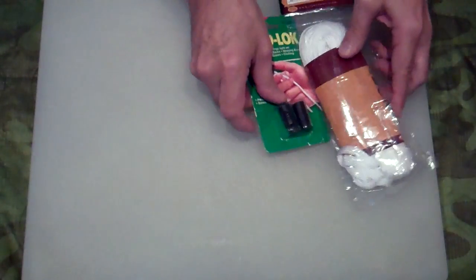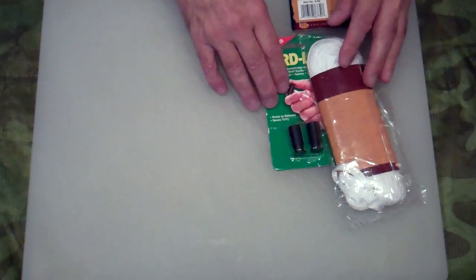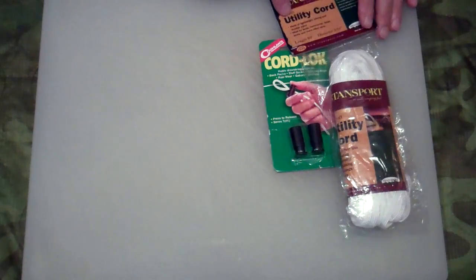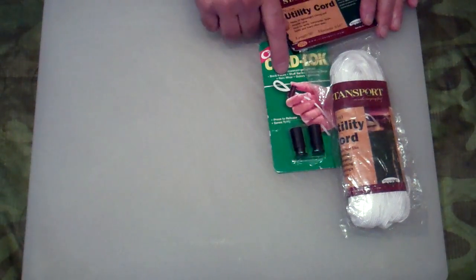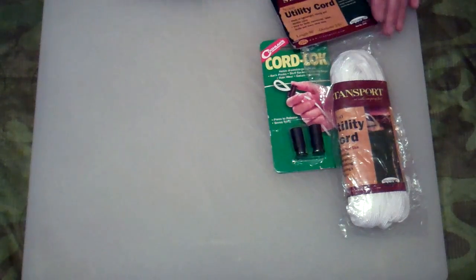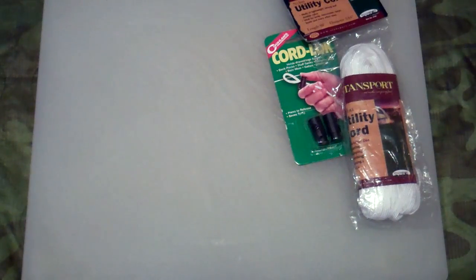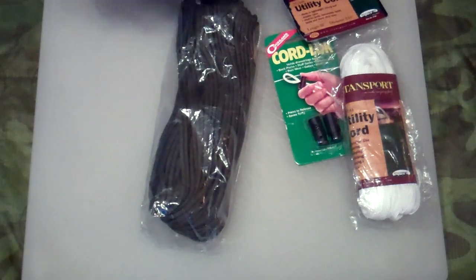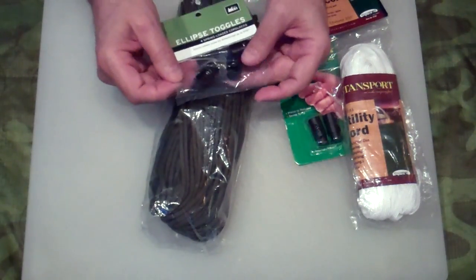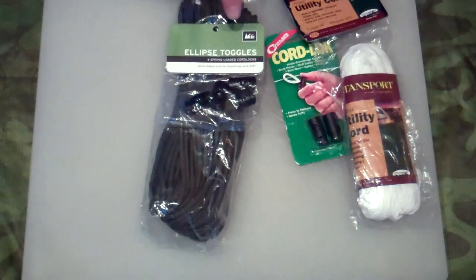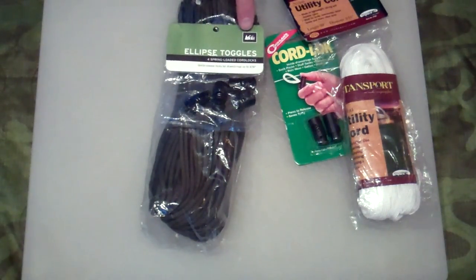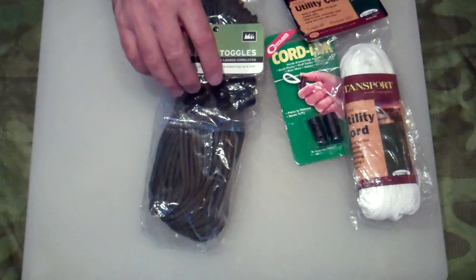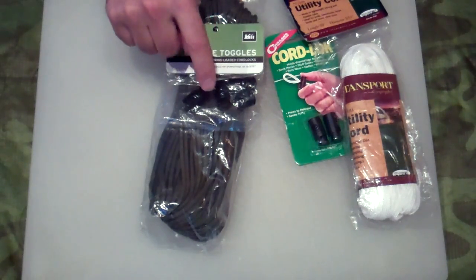Alright let's make one of these. Now you can pretty much get paracord and cord locks anywhere. Here's an example of a very inexpensive set, utility cord and cord locks from a local sporting goods shop. My favorite is to use good quality mil-spec paracord and I like these heavy duty elliptical toggles or cord locks. In this case I got them from REI but you can get them online and at a lot of major sporting goods stores.